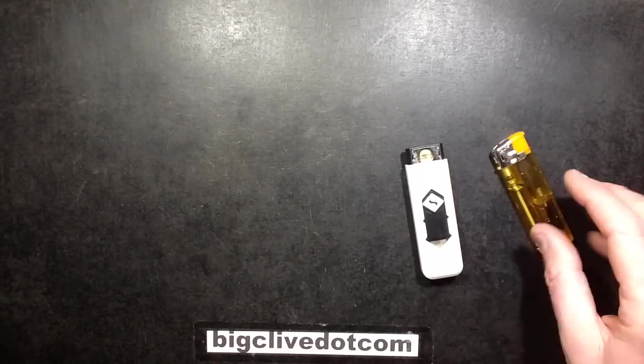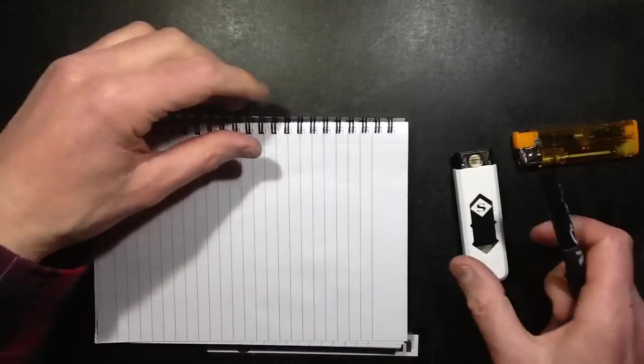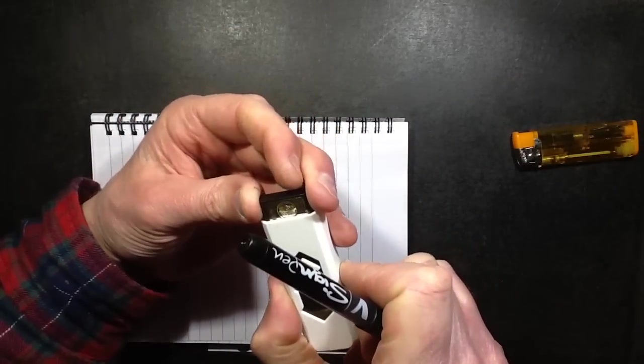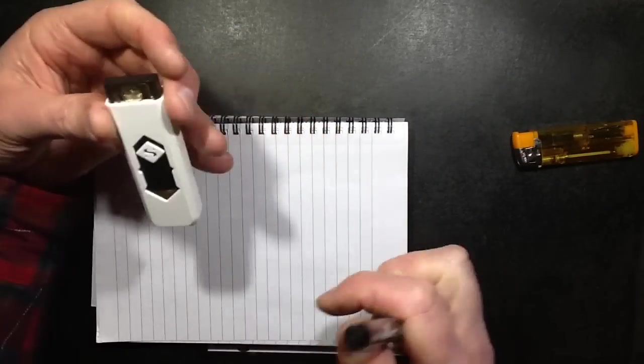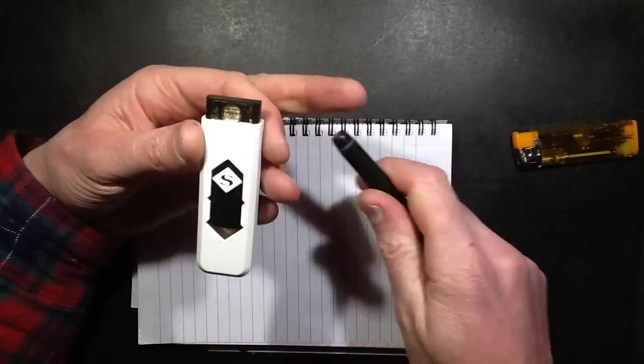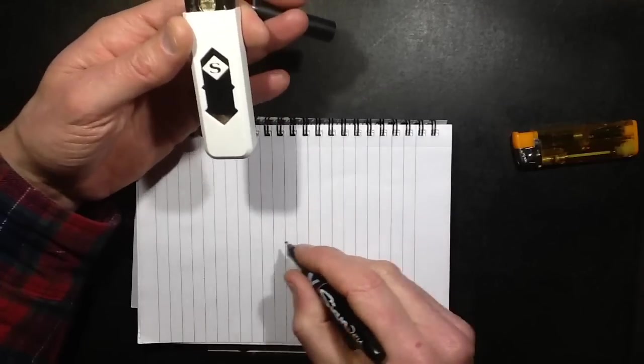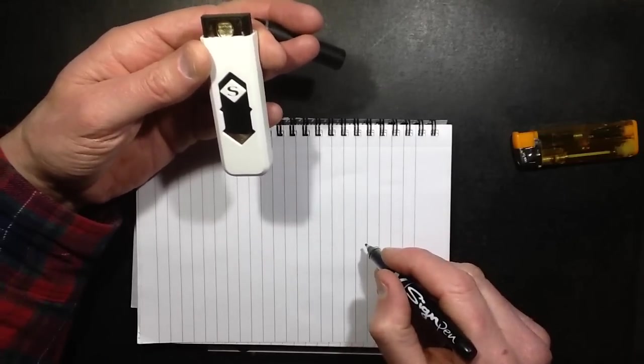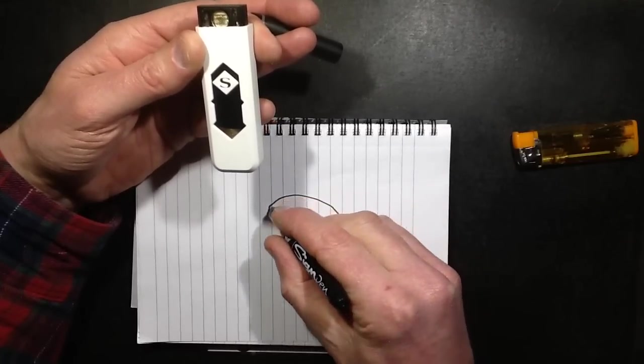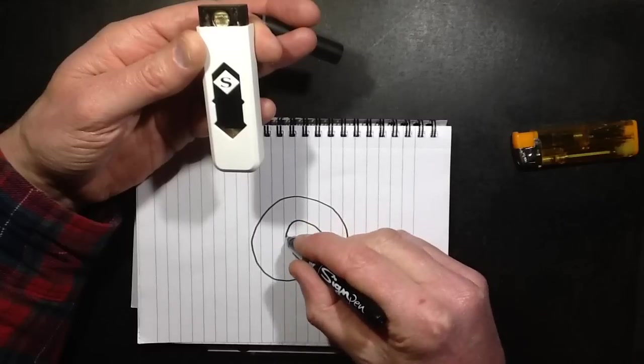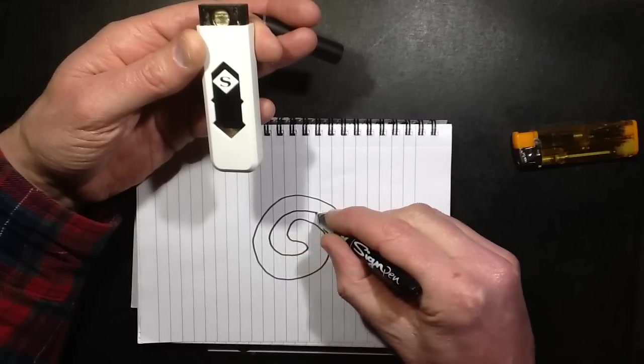Let's get a wee notepad here. The element assembly seems to be a ceramic tray with an element coming in, like this, looping round going back out again.